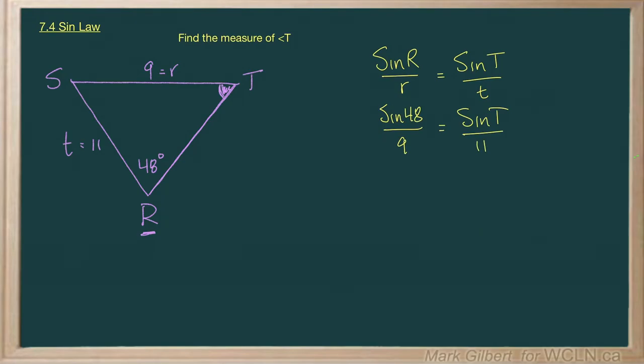Now we can do a couple of things here. We can multiply both sides by 11 first, but I think once again what I would do is calculate the side we know all of the information on first.